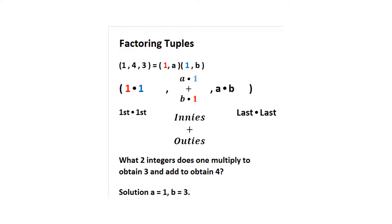What two numbers multiply to get three and add to get four? That would be one and three: one times three is three and one plus three is four. You could also say a is three and b is one — the order is not important.